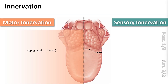Since this learning objective is really focused on sensory innervation, I want to go ahead and just toss the motor supply up here already. We've got the hypoglossal nerve that is going to supply somatic motor innervation to all of the intrinsic and extrinsic tongue muscles, except for palatoglossus, which is innervated by vagus.